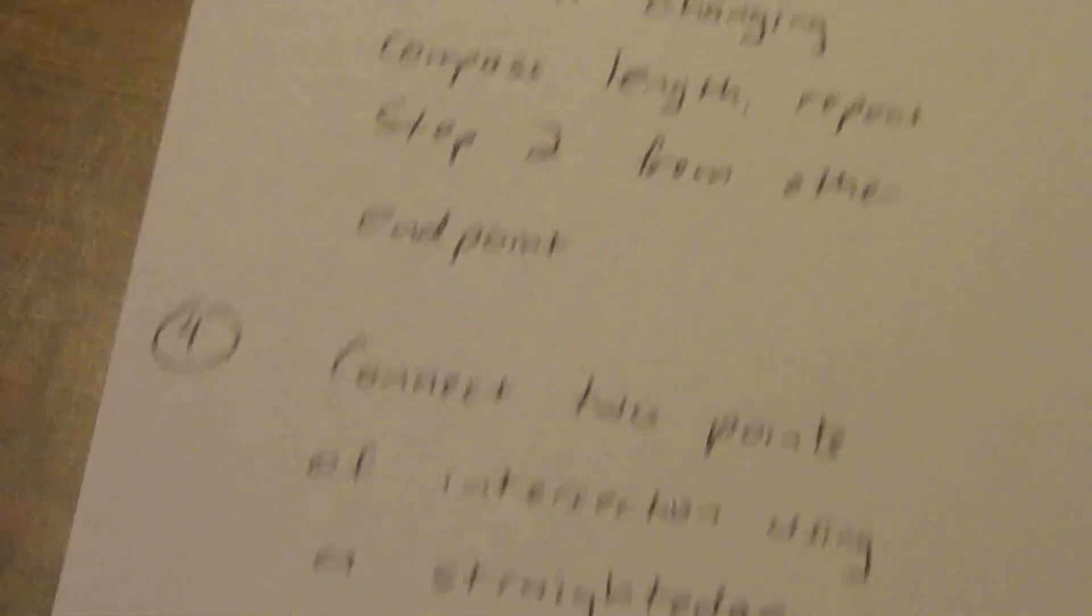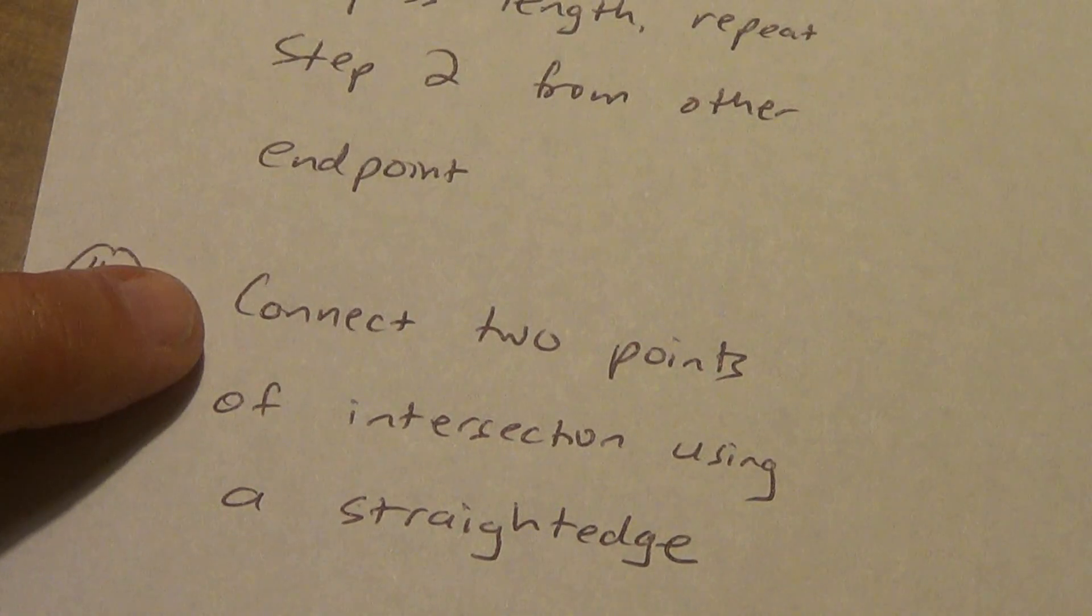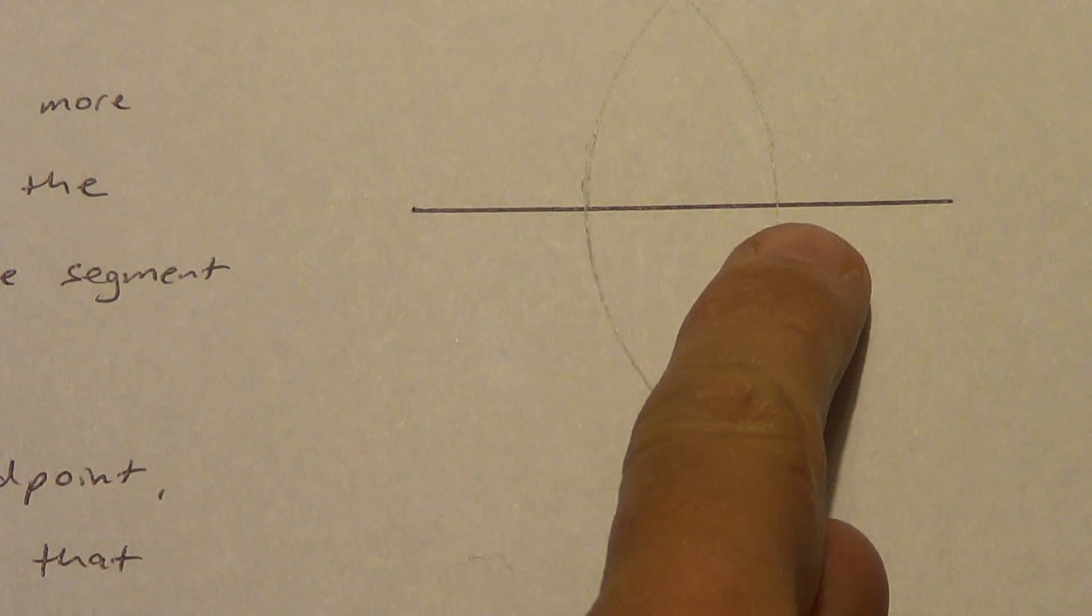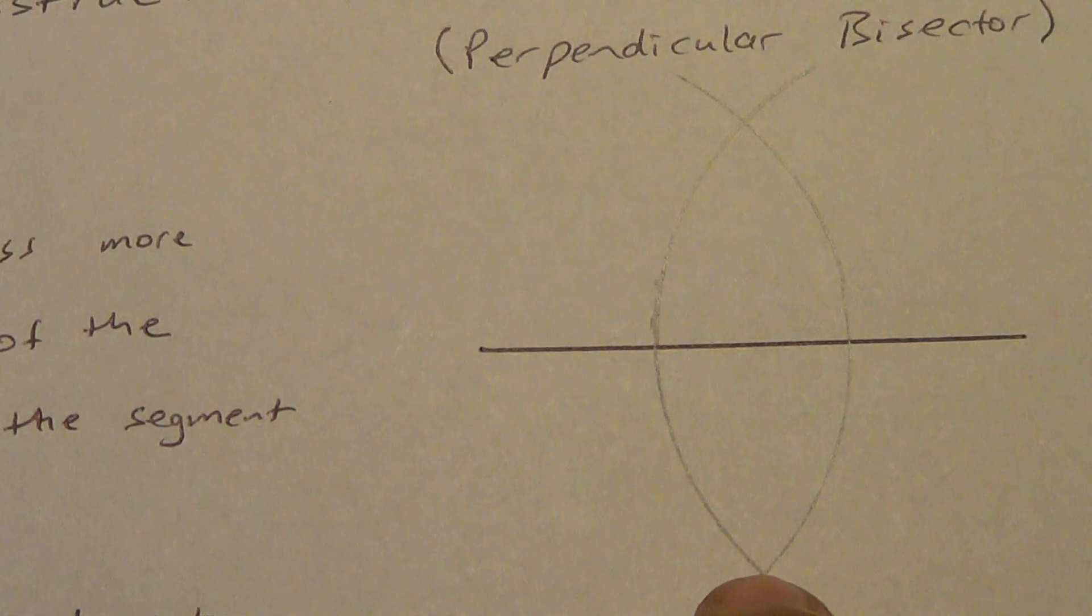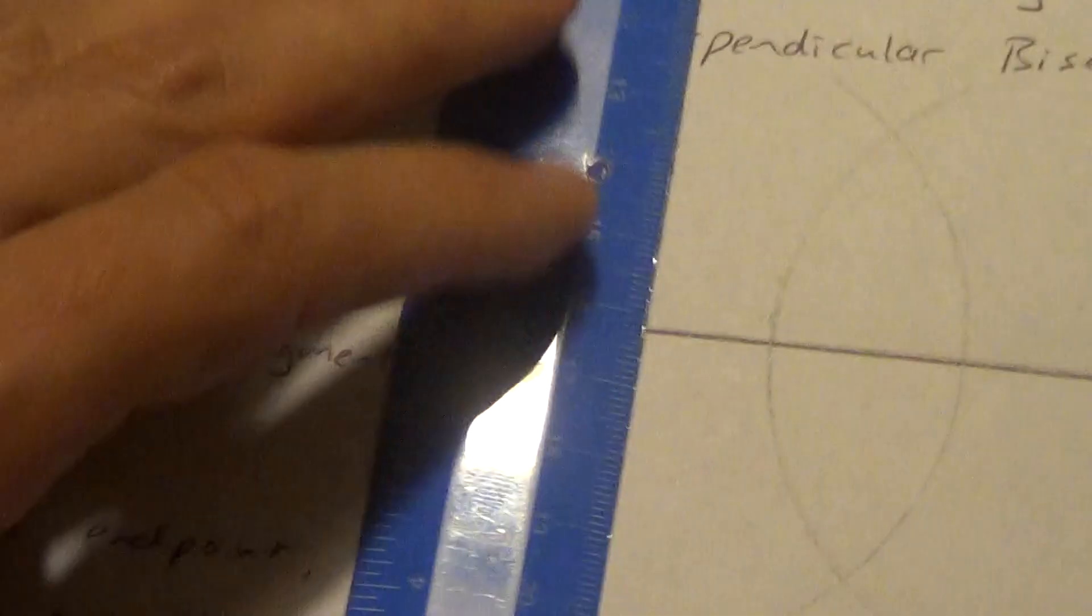Now what does step four say? Last step. We're going to connect our two points of intersection using a straight edge. Now not these two points of intersection. This one up here. The points of intersection with the arcs, not the arc with the segment.